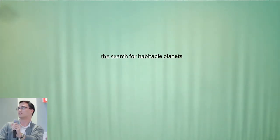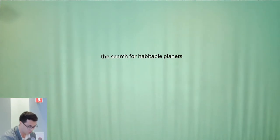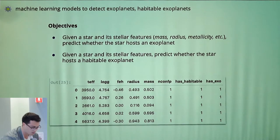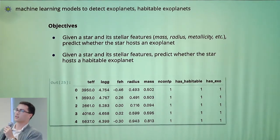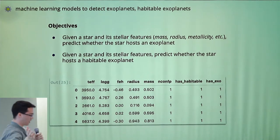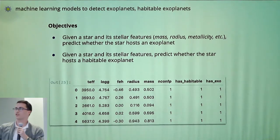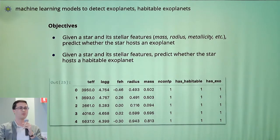Next thing I wanted to look at was machine learning models to detect habitable planets or exoplanets in general. You can see my objectives were given a star and its stellar features, those being things like the gravity, the radius, the mass, temperature, can you predict whether it has an exoplanet orbiting it or a habitable planet orbiting it?